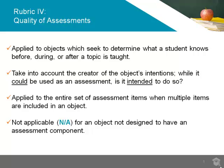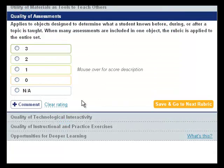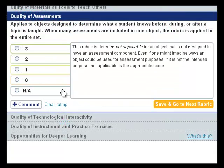While many assessment items are included in one object, as is often the case, the rubric is applied to the entire set of assessments as a whole. If an object is not intended to be an assessment, or if no assessments exist in the object, then you should rate the object NA for this rubric, as it is not applicable.